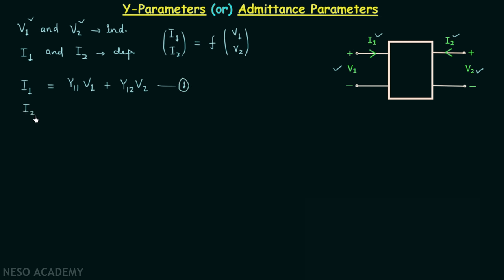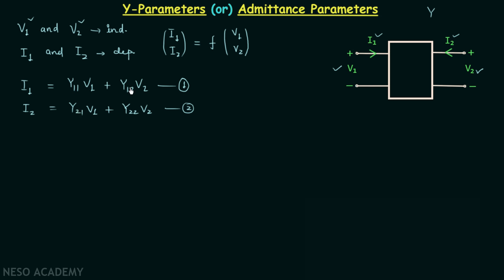Similarly, current I2 equals Y21·V1 plus Y22·V2 — this is equation number 2. These two equations are very important. We represent the four parameters as Y11, Y12, Y21, and Y22 because upon calculation all four parameters are found to be admittances, and we represent admittance by uppercase Y, hence the Y in each parameter's name along with the required subscript.